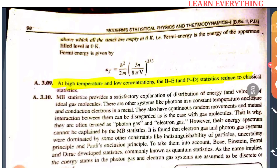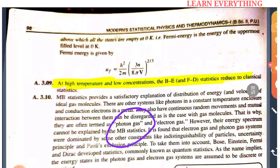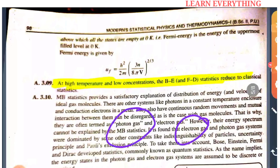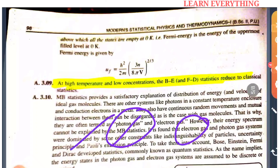However, the energy spectrum of photon gas and electron gas cannot be explained by MB statistics. These systems are dominated by other constraints — like indistinguishable particles, the uncertainty principle, and the Pauli exclusion principle.